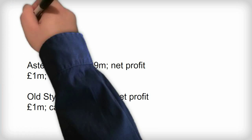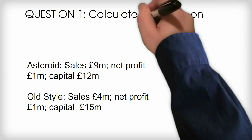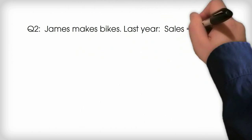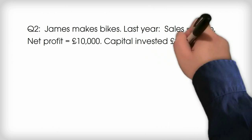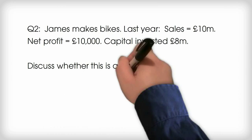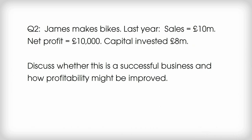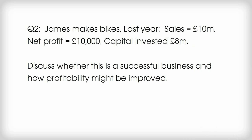Now, have a go at these questions. Question one: calculate the return on capital for Asteroid and Old Style — see the figures above. Question two: James runs a business that manufactures mountain bikes. He employs 100 people. His sales turnover last year was £10 million, his net profit last year was £10,000, and his capital invested is £8 million. Discuss whether this is a successful business and how its profitability might be improved.